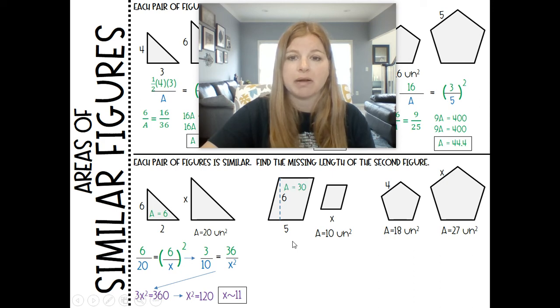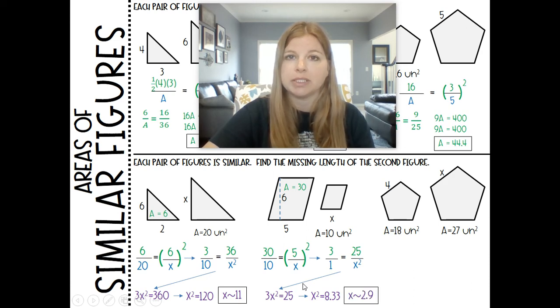Area of my first parallelogram here is 30. So 30 over 10 is equal to, I can set up my scale factor, 5 over x squared. This then becomes 3 over 1. I'm just going to simplify that ratio. Equals 25 over x squared. Let's cross multiply. So we get 3 times x squared equals 25. Divide by 3. Take the square root and we get approximately 2.9.